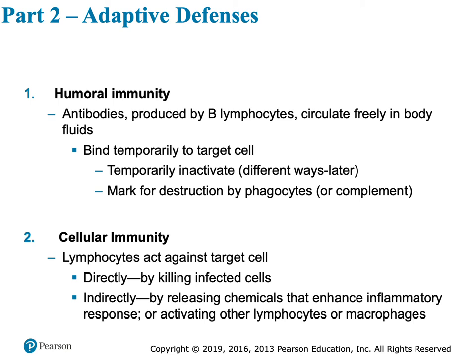Humoral immunity — that's going to be B lymphocytes, and they make antibodies. He has some antibodies bound to him. When he has been activated and learned how to do his job and meets someone that should trigger a response, he creates new B lymphocytes called plasma cells, and plasma cells throw out antibodies into the bloodstream — freely floating around in body fluids. Humoral means fluid.